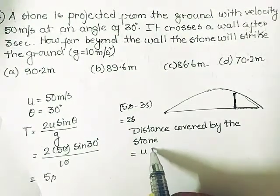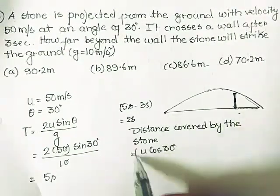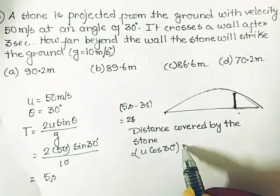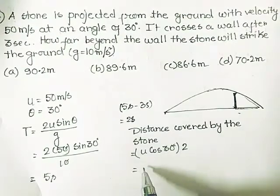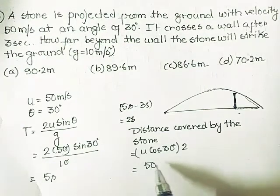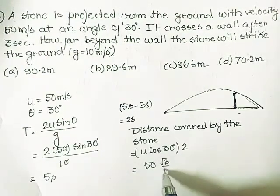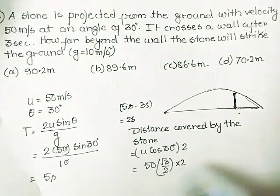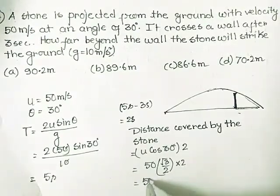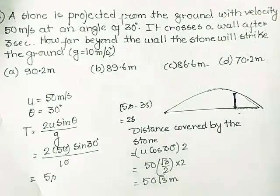is equal to u cos 30 degrees - that is the horizontal component - times 2. So u is 50, cos 30 degrees is root 3 over 2, times 2. So the distance covered after crossing the wall is 50 root 3 meters.